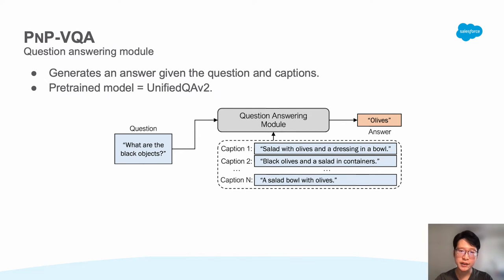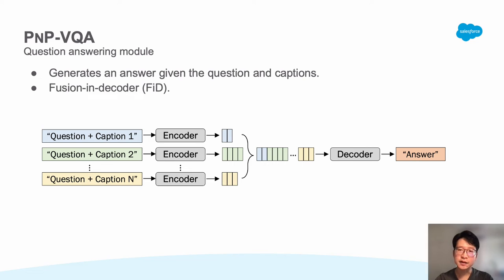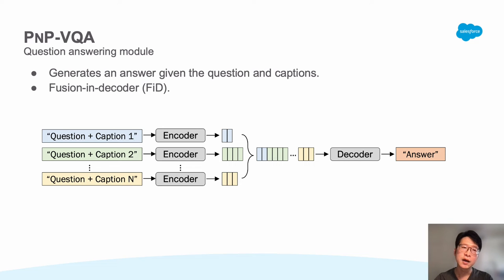For our question answering module, it will generate the answer given the question and captions as input. The pre-trained model is called UnifiedQA-V2, an encoder-decoder language transformer trained for reading comprehension. Since there is a maximum input length restriction on the encoder due to positional encoding, it could limit the number of captions used for question answering. To overcome this limitation, we adopt Fusion in Decoder, a method proposed by Meta Research. Essentially, we encode a question with each of the captions separately, then concatenate the encoder representations of all tokens as input to the decoder.